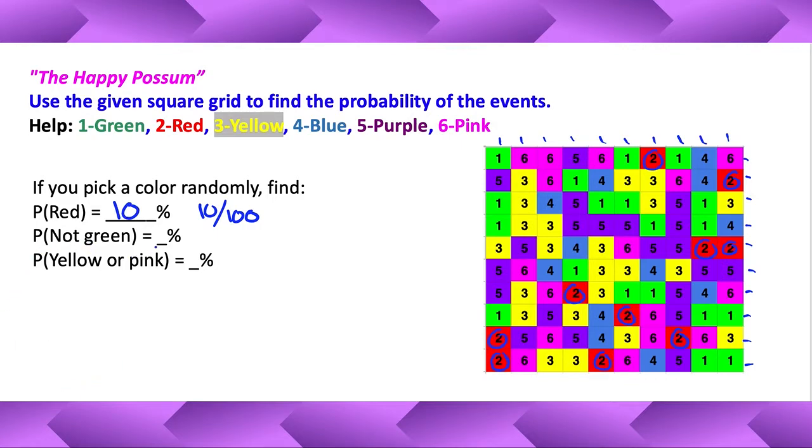Okay, probability of not green. Well, oh boy, what are we going to do? Do you want to count all the ones that are not green? Probably not. Here's what I'm going to do. I'm going to count all the greens and then just do the opposite. So here we go. How many greens are there? Counting them: one through nineteen. Okay, there's nineteen greens.